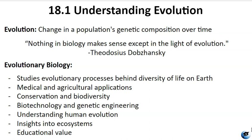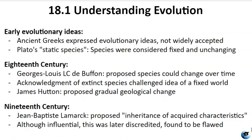Evolutionary theory explains the development of adaptations and traits that allow organisms to survive and reproduce, and the evolution of diseases and drug-resistant pathogens in medicine. In agriculture, it helps combat pests and optimize crop yields. Conservation and biodiversity is enhanced by understanding evolutionary relationships between species, informing conservation strategies. Evolutionary principles are applied in biotechnology and genetic engineering for developing medicines, improving crops, and understanding genetic inheritance. Evolutionary biology helps us better understand human ancestry, interactions between species and ecosystems, fostering critical thinking and scientific inquiry.